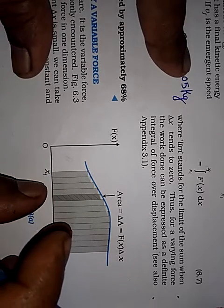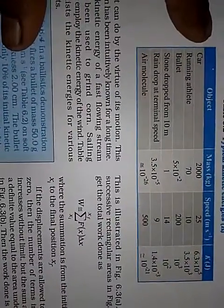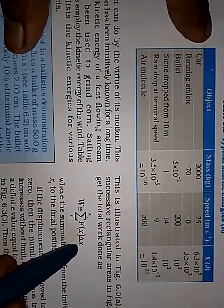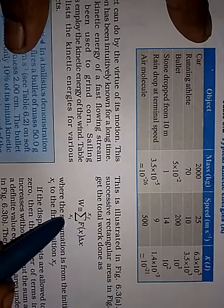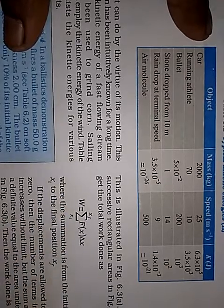And you add all those things. So this addition is represented by summation, sigma. That is what is in this formula. So force into distance for all the, right from x i to x f. If you add everything, you will get total work done.